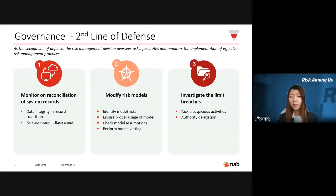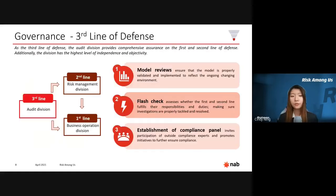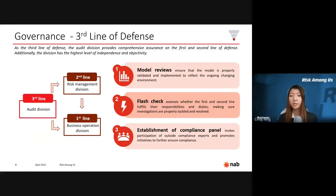They should also consider delegating authority to appropriate individuals to avoid confusion in duties. Moving on to the third line of defense, comprised of the Internal Audit Division, which provides highly independent and objective evaluations of the overall risk management effectiveness of the bank, including how strong the first and second lines of defense are.